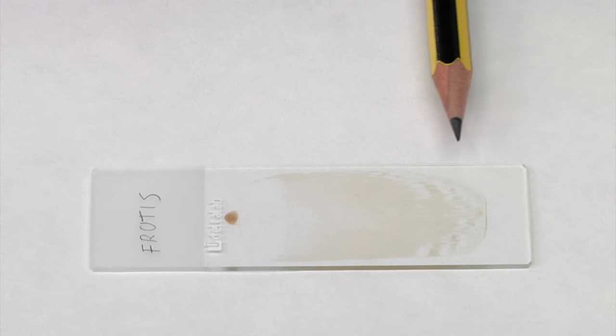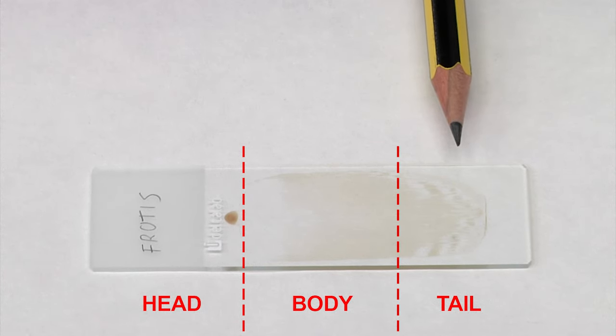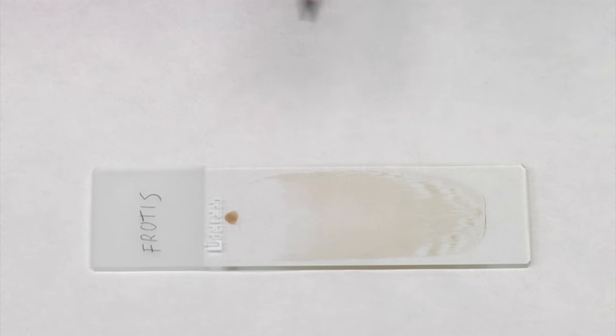The tail and the terminal area. It is the end of the extension, so they are not good areas for visualization. Since the leukocytes are large, the erythrocytes are deformed and we find abundant platelets.